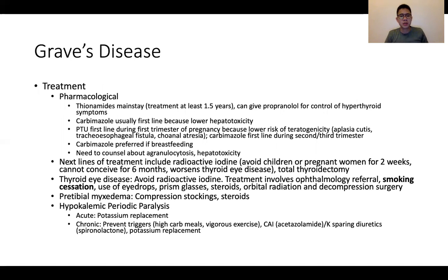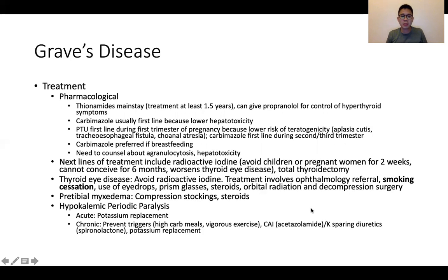In terms of treatment, from the pharmacological point of view, thionamides remain the mainstay. Carbimazole is the first choice because of reduced haematotoxicity, with some considerations in pregnancy. Next lines of treatment include radioactive iodine as well as surgery. Of note, radioactive iodine can worsen thyroid eye disease, so in a patient with thyroid eye disease this may not be a treatment option to offer. The options for eye disease treatment are listed here, and hypokalemic periodic paralysis is one of the conditions that can appear in the Station 5 exam in the background of thyroid disease.